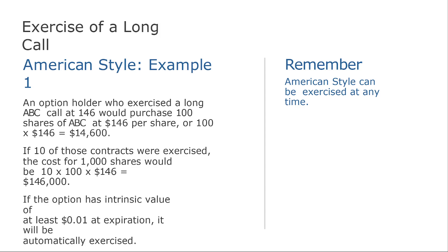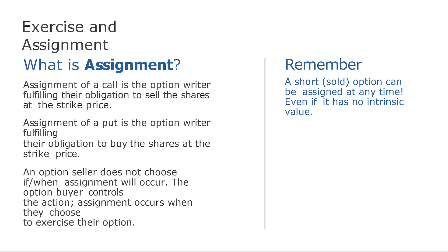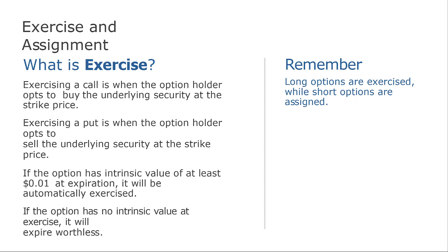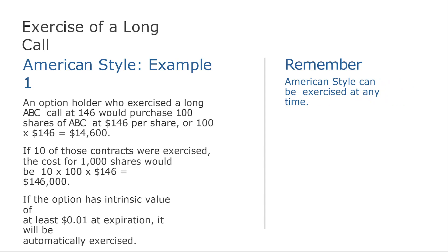There are two types of option styles: American and European. American style means the option can be exercised at any point from the moment you buy it until it expires. So if you have a 30-day expiry, you can exercise at any time during those 30 days. With European style, you cannot do that — it can only be exercised at the end of the contract period, at expiration, as long as it ends up in profit. For example, a holder exercises a long ABC call at $146 and purchases 100 shares at $146.